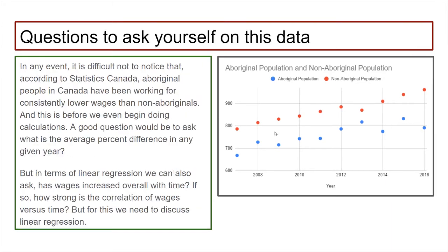Questions to ask yourself for this data. It is difficult not to notice that non-Aboriginals are earning more than Aboriginals. A good question would be to ask, what is the average percent difference in any given year? But that's not really a linear regression question, because that wouldn't be related to year. That would be related to how much more does one group of people get paid over another group. In terms of linear regression, we can ask, has wages increased overall with time?